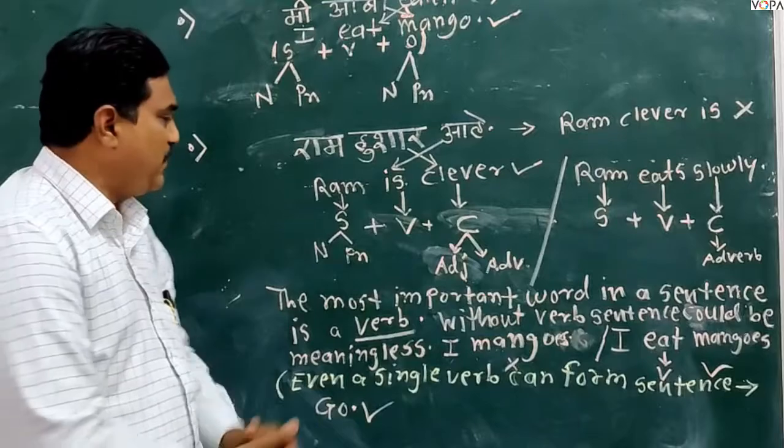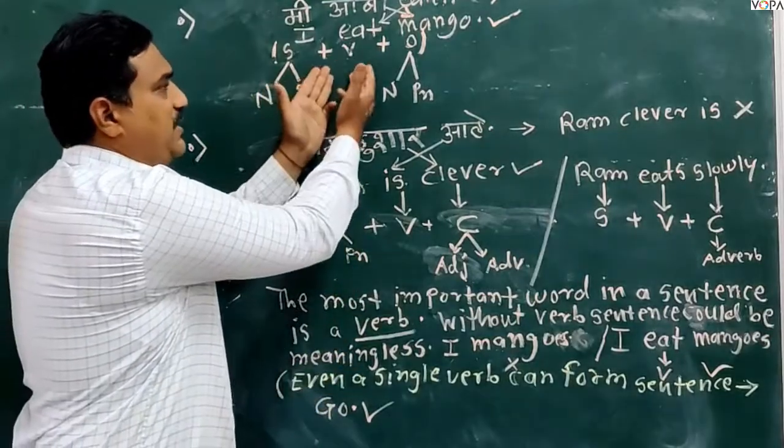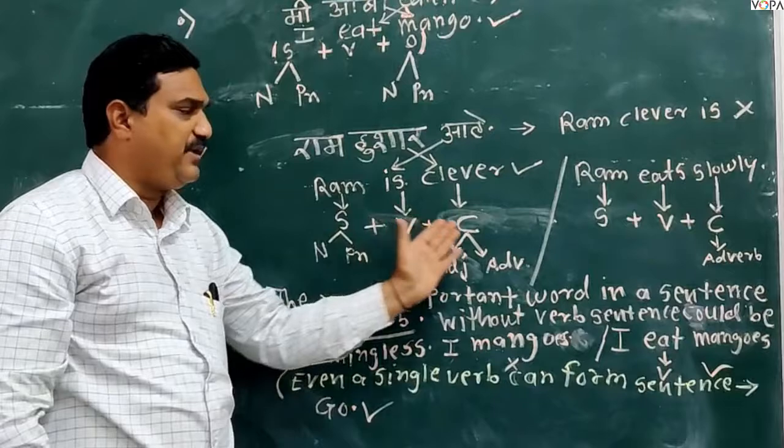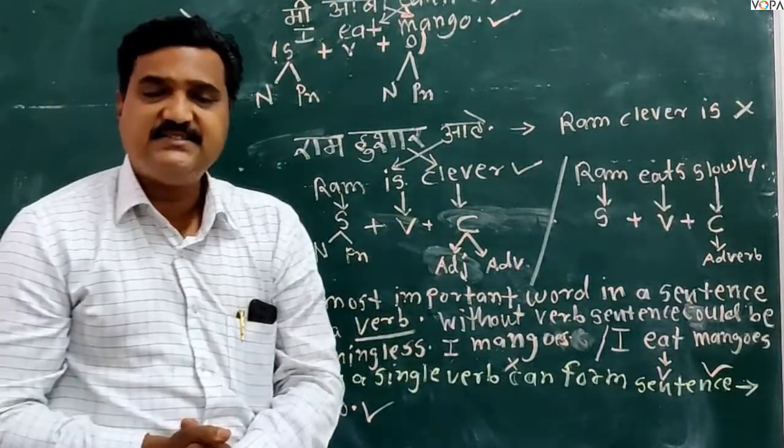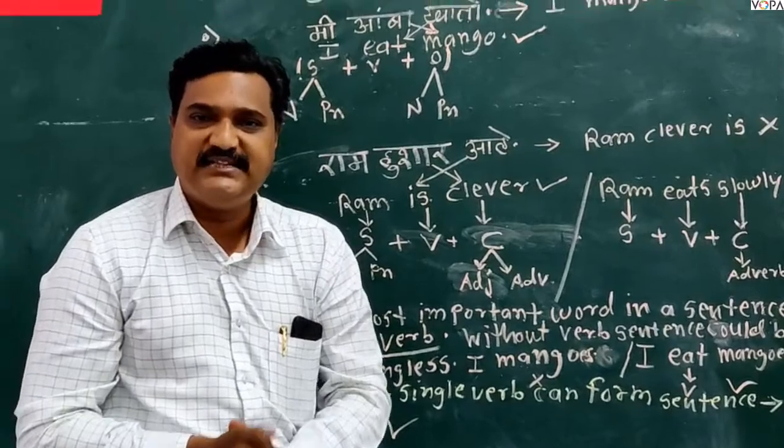So ideal English sentence formation is subject plus word plus object, and subject plus word plus compliment. And my friends, in the sentence, the most important part of the sentence is word.